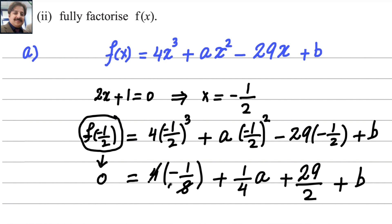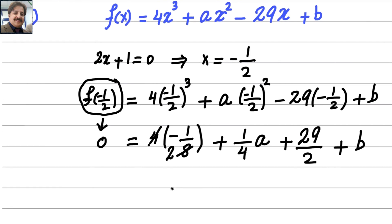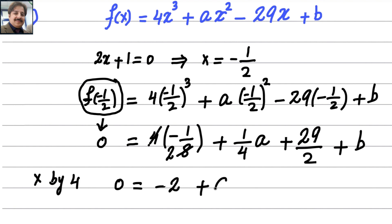4 can cancel, giving negative 1 over 2. The highest denominator here is 4, so we multiply every term by 4 to clear denominators. 0 multiplied by 4 is 0. Negative 1 over 2 multiplied by 4 gives negative 2. The 4 cancels from the a term leaving a. 4 divides by 2 giving 2, and 2 multiplied by 29 gives 58. And 4 multiplied by b gives 4b.